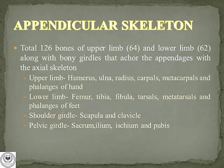Similarly, a total of 62 lower limb bones are included: the femur, tibia, fibula, tarsus, metatarsus, and phalanges of the feet. Apart from this, the shoulder girdle comprising the scapula and clavicle is also included, and the pelvic girdle comprises the sacrum, ilium, ischium, and the pubis bone.